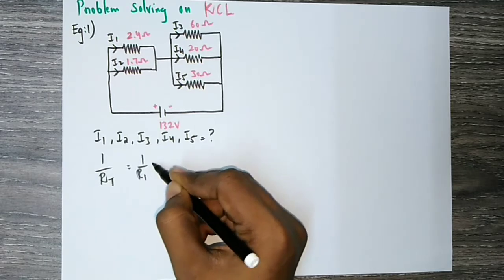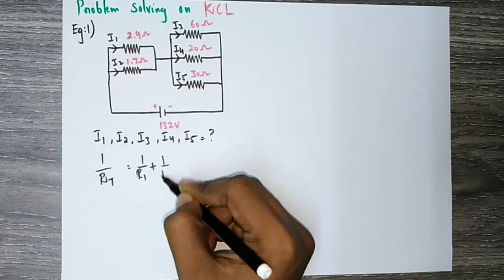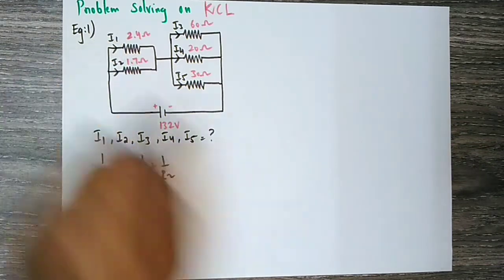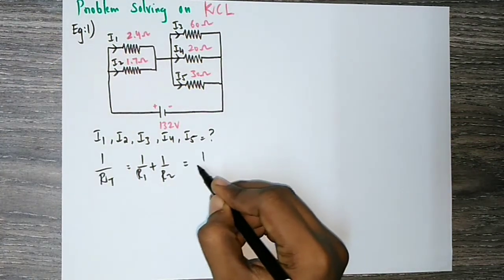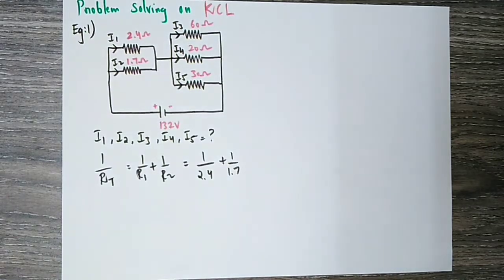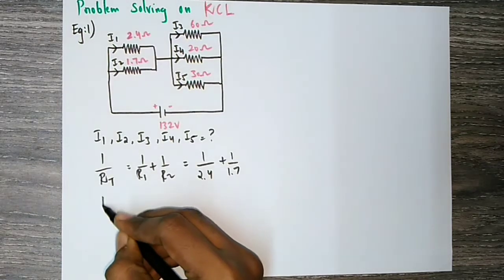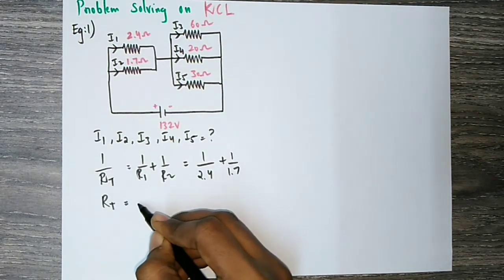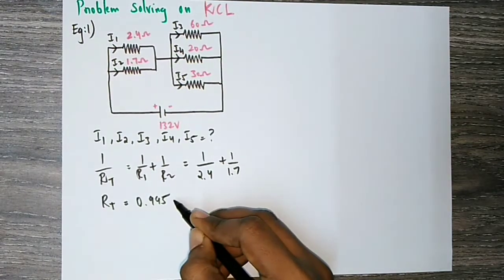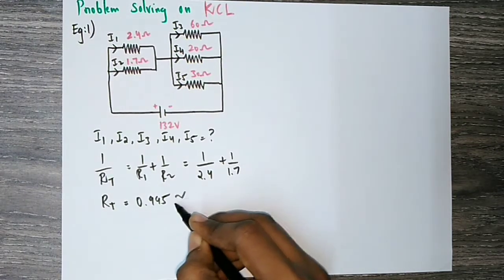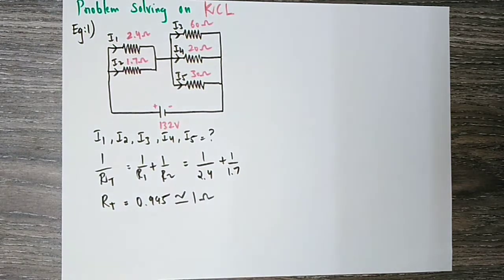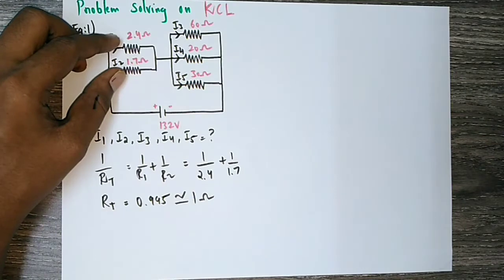We know the formula: 1 over R_total equals 1 over R1 plus 1 over R2. Substituting, we get 1 over 2.4 plus 1 over 1.7, which gives R_total approximately equal to 1 ohm. So here we have a total resistance of 1 ohm.